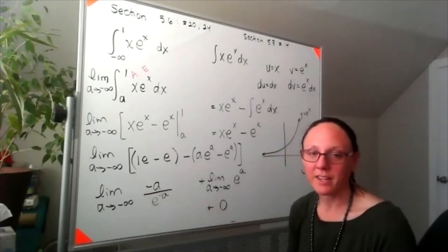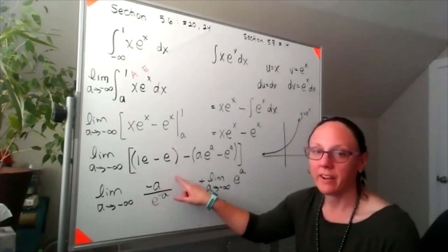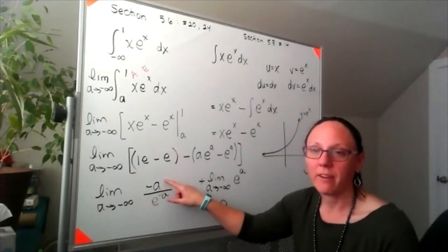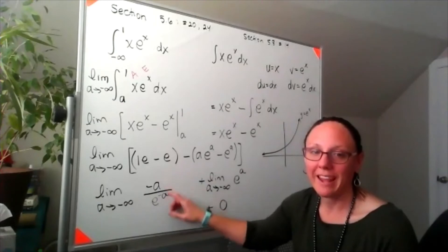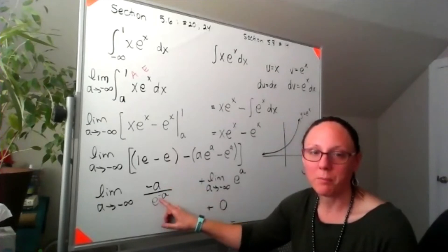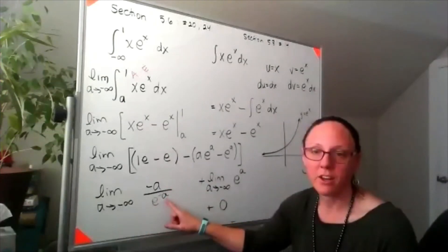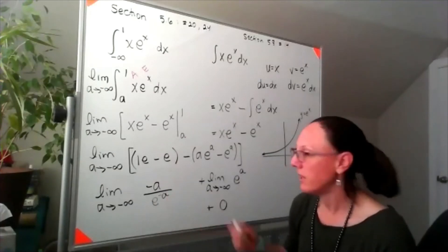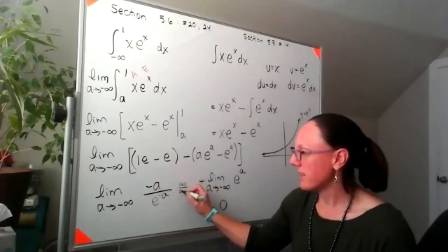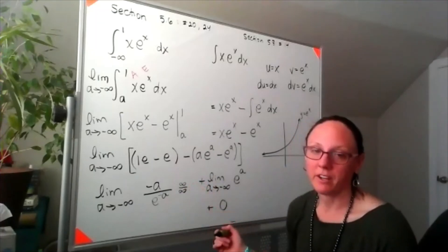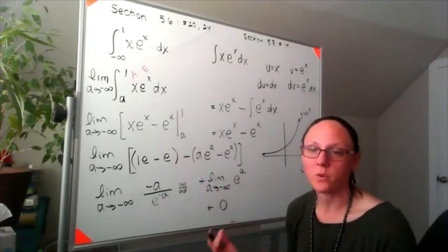By rewriting it like this, when I plug in the negative infinity, I now have infinity on the top, and because this would be minus a negative infinity, I'll have e to the infinity, or infinity on the bottom. Once this is in infinity over infinity form, we can use L'Hôpital's to evaluate that limit.